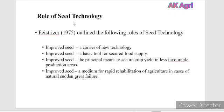Now the role or importance of seed technology: improved seed is a carrier of new technology and it is a basic tool for securing food supply. An improved seed acts as a principal means to secure crop yields even under less favourable conditions. It also acts as the medium for rapid rehabilitation of agriculture in cases of natural disasters.